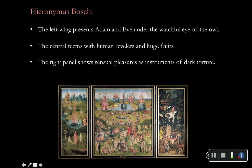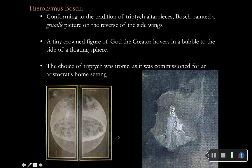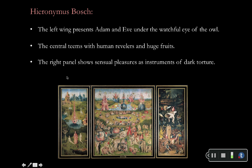When we open the painting, we have the central panel and two exterior panels that close up. The left wing represents Adam and Eve, with another personification of God. The central panel shows humans reveling in earthly goods — fruits, all sorts of animals. The right panel shows sensual pleasures as instruments of dark torture. In some ways we have the beginning, middle, and end: creation with Adam and Eve, then folly and vices, then consequences representing some sort of hell.